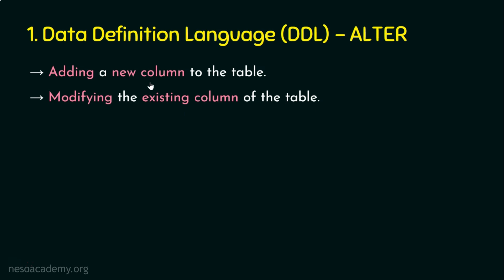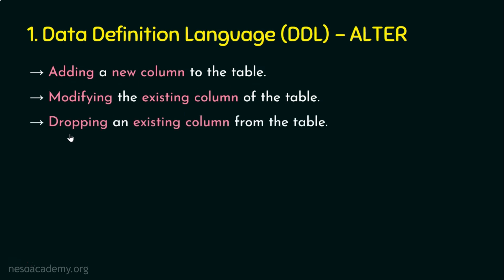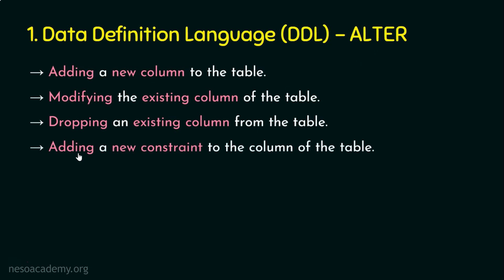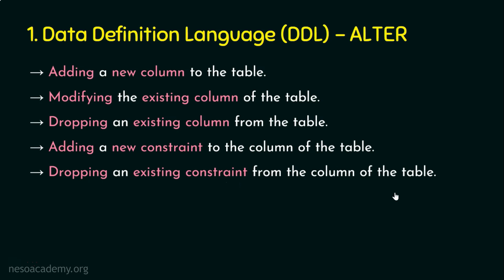When we have the provision to add a new column, we also have the provision to drop an existing column — we can use ALTER for that too. Additionally, if we have a table and later realize we want to enforce some constraints, we can add a new constraint to an existing column using ALTER. Similarly, ALTER can drop an existing constraint from a column. So ALTER is used for: adding a new column, modifying an existing column, dropping a column, adding a constraint, and dropping a constraint.